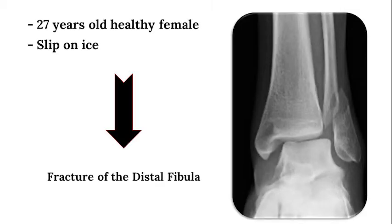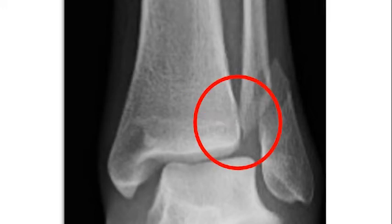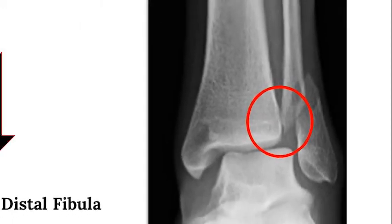Now let's look at examples of ankle x-rays of patients with ankle fractures. This is a 27-year-old female who had a slip on ice, and the x-rays demonstrate a fracture of the distal fibula, widening of the medial clear space, with a possible injury to the syndesmosis given alterations in the tibiofibular overlap and clear space.